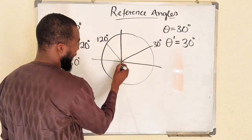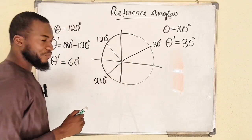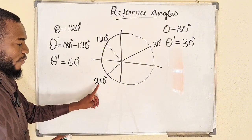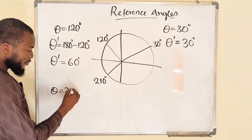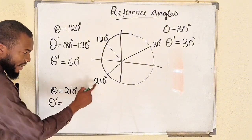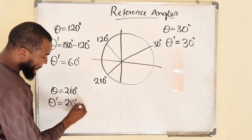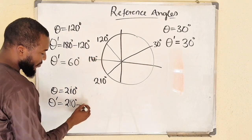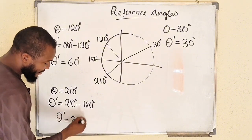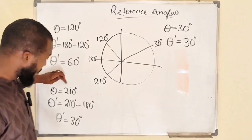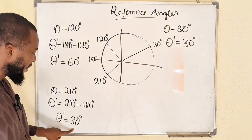If you are situated somewhere here — let's assume this is 210 degrees — to find the reference angle for 210, you take the actual angle, which is 210, minus 180 degrees, and this gives us 30 degrees. So the reference angle of 210 is equal to 30 degrees.